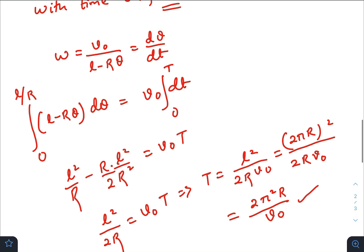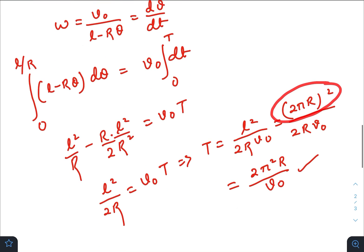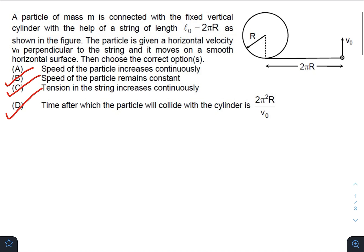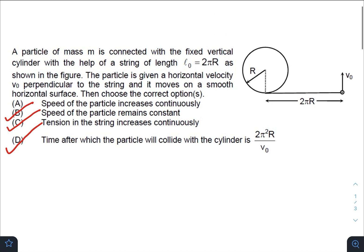l is given in the question, it is equal to 2πR, so the time taken is 2π²R/v₀. So option D is also correct. Speed of the particle remains constant, so option A would be incorrect. So the final answers are B, C, and D.